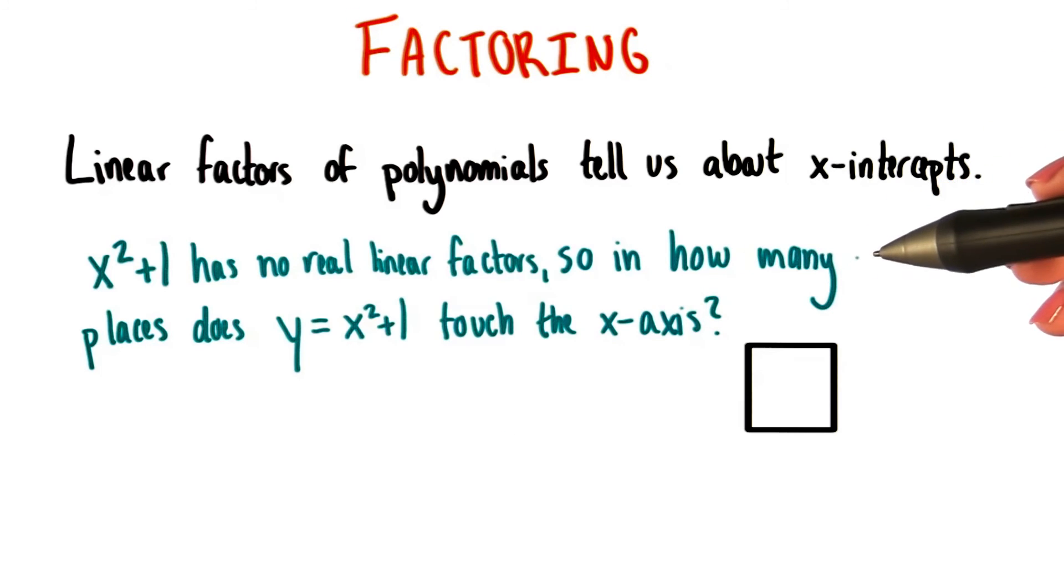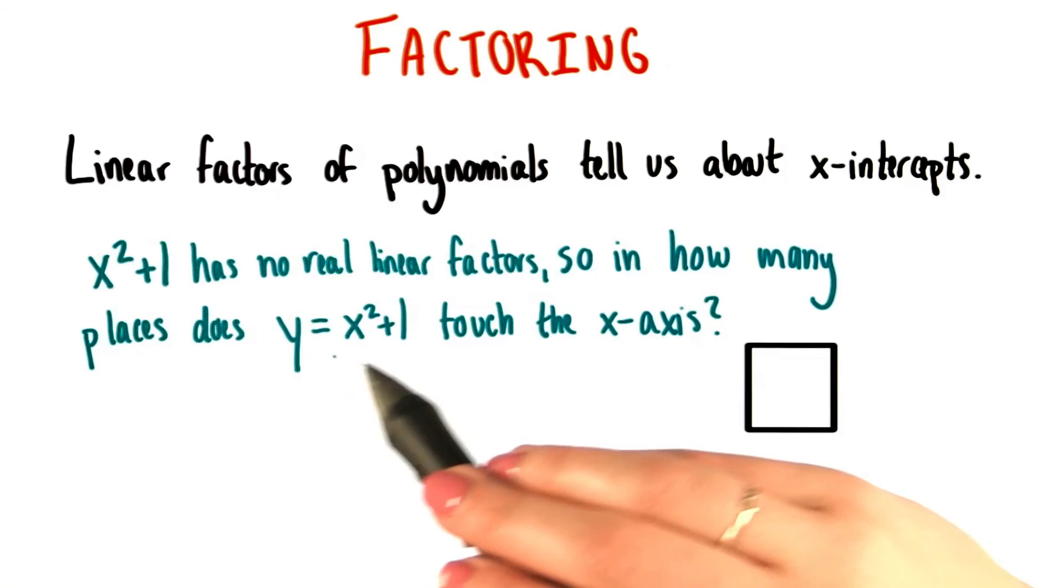Considering this, how many places do you think that the graph of y equals x squared plus 1 touches the x-axis?